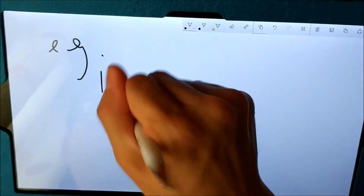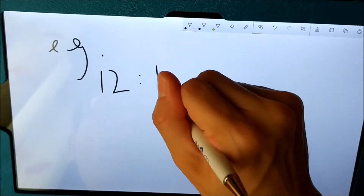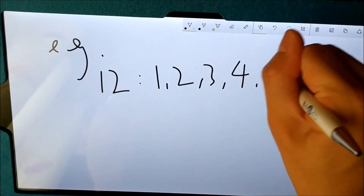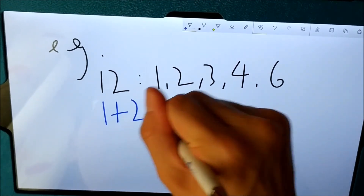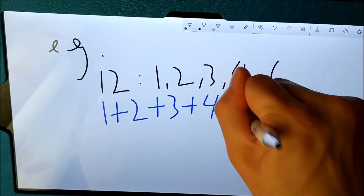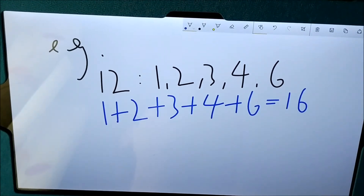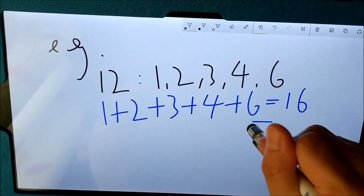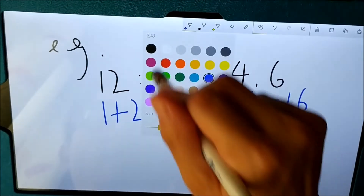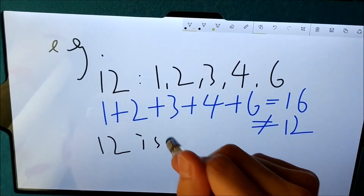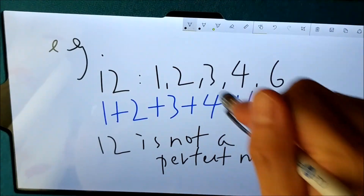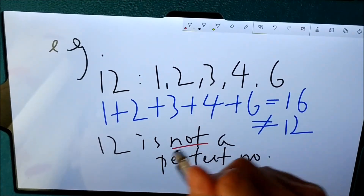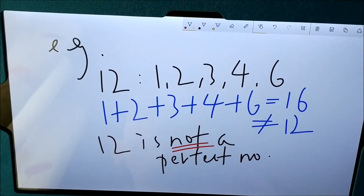I will give you another example. Now when we talk about the number 12, when we list the proper factors, we have 1, 2, 3, 4, and 6. But when we try to verify the sum of the proper factors, 1 + 2 + 3 + 4 + 6 is not equal to 12, but it's 16. So this number is not the same as 12. We can conclude that the number 12 is not a perfect number, because the sum and the number itself are not the same.